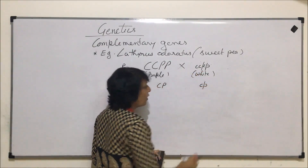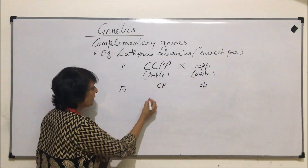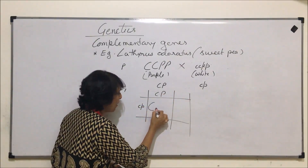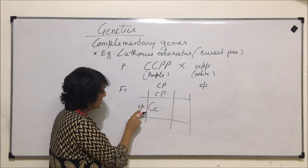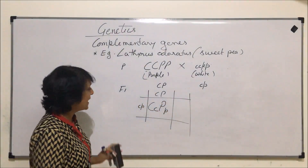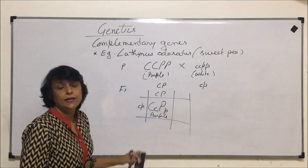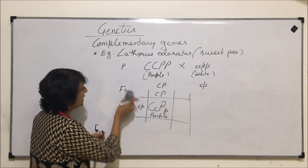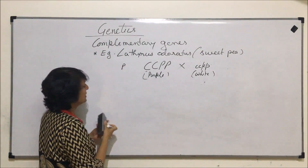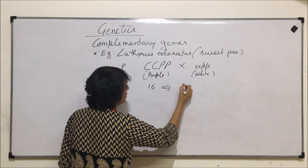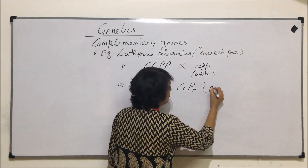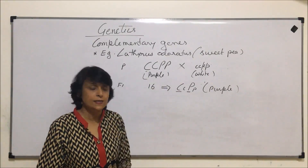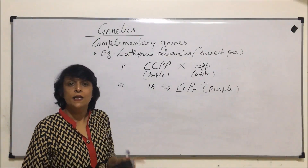In F1, the first parent produces gametes with capital C and capital P, while the second parent produces gametes with small c and small p. The F1 offspring will carry one dominant C and one dominant P, so all F1 plants will be heterozygous CcPp and will show purple flowers, demonstrating the law of dominance. All F1 offspring are purple because both dominant genes are present to synthesize both enzymes.